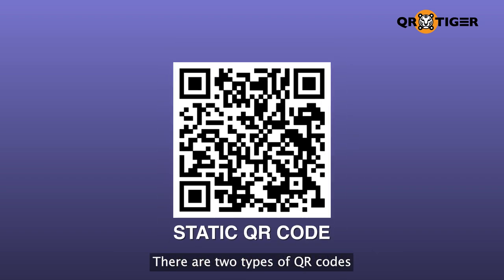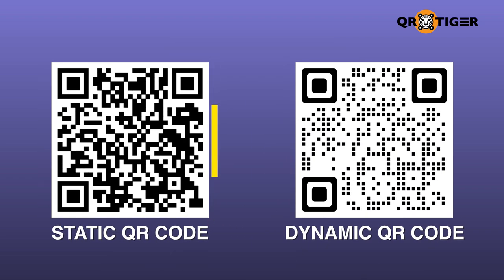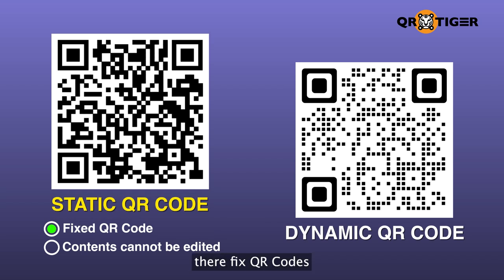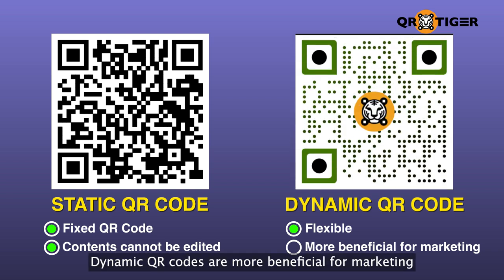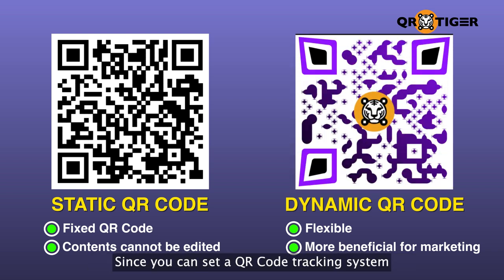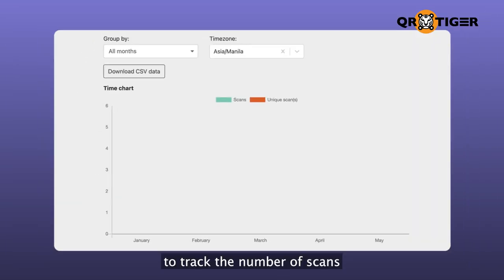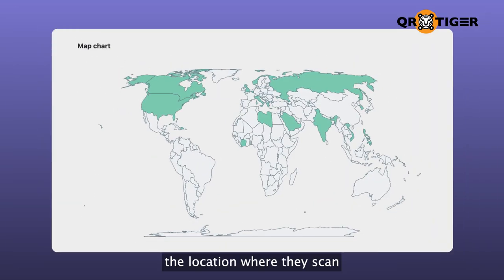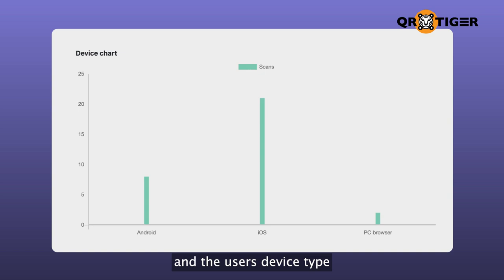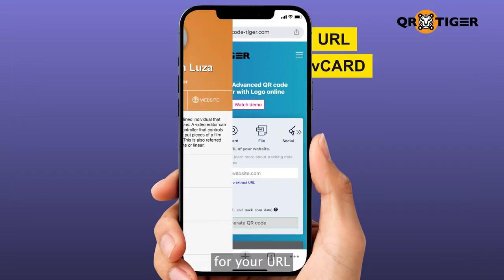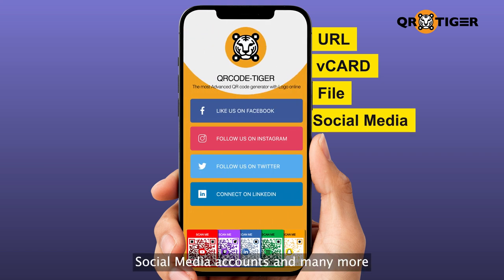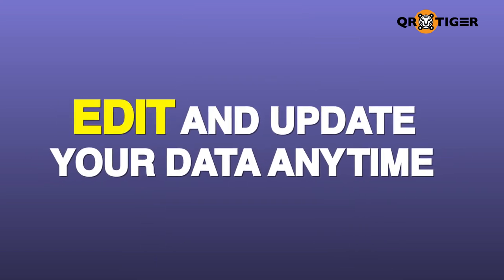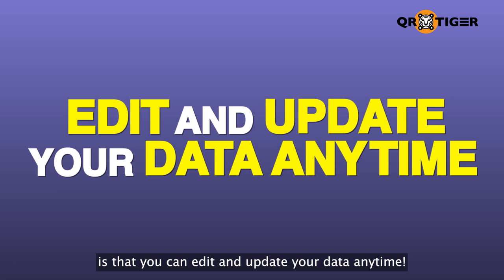There are two types of QR codes: static and dynamic. Static QR codes are fixed and their contents cannot be edited. Dynamic QR codes, on the other hand, are the flexible type. Dynamic QR codes are more beneficial for marketing since you can set up a QR code tracking system to track the number of scans, the location where the user scans it, and the user's device type. You can generate QR codes for your URLs, vCards, PDF files, social media accounts, and many more. What makes it even better is that you can edit and update your data anytime.